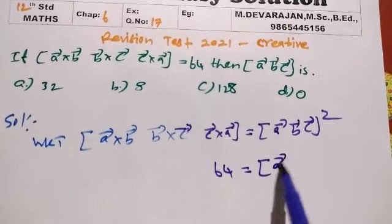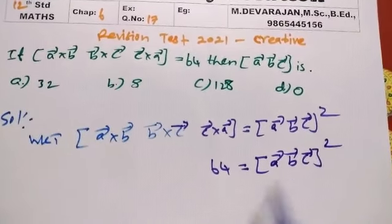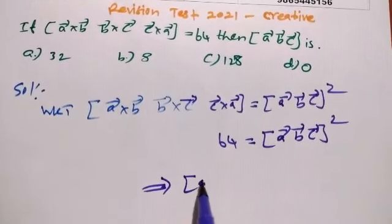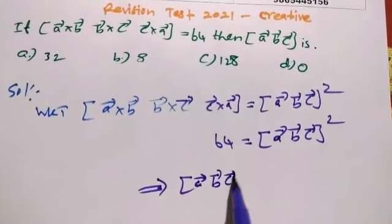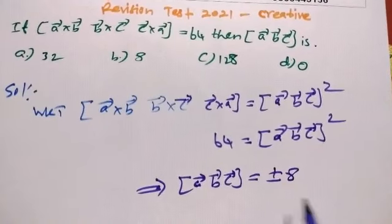So 64 equals box A B C all squared. Taking square root on both sides, you get box A B C equals plus or minus 8.